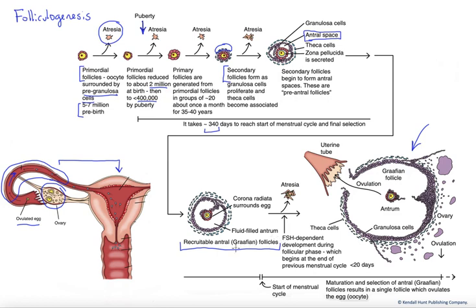These are the follicles that enter an ovarian or a menstrual cycle — the ovarian cycle being specific to the actions in the ovary, the menstrual cycle including coordination with the uterus. Now, there are a dozen or more of these recruitable antral follicles, yet we want to ovulate a single egg. So it's very important that atresia occurs during this ovarian cycle, and that's going to be aided by the anterior pituitary hormones that are going to help with selection of this one Graafian or mature follicle to ovulate its egg.